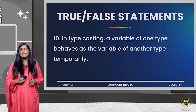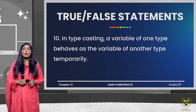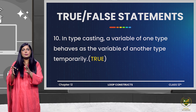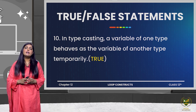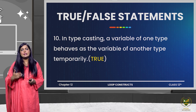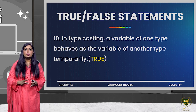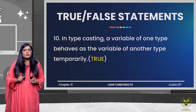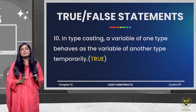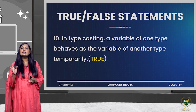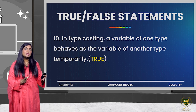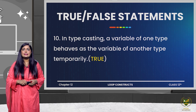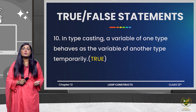In typecasting, a variable of one type behaves as a variable of another type temporarily — this is true. Typecasting means the data type of a variable is temporarily changed. For example, if a value was coming as a string, you convert it into an integer. If you have a string variable holding the value 10 and want to add it to another number, doing so directly gives an error, so you typecast it to an integer and then add it without syntax or logical error. So the statement is true.